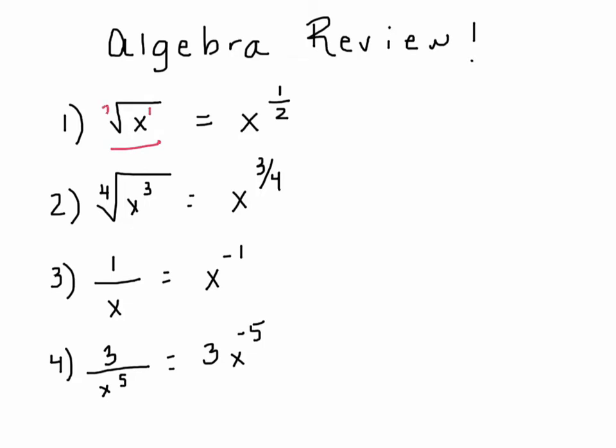That is because the basic rule is the nth root of x to the p power is always going to be x to the p over n power. Same thing with number two, the fourth root of x cubed is simply x to the 3 fourths power.